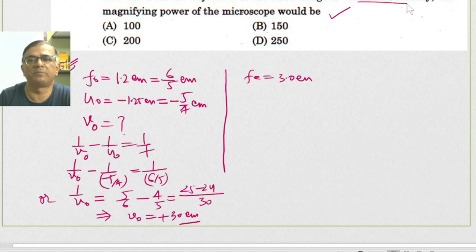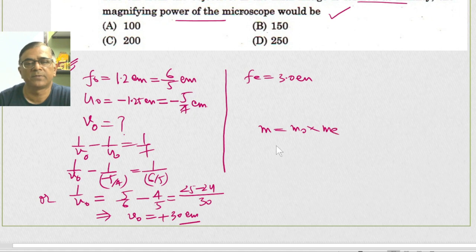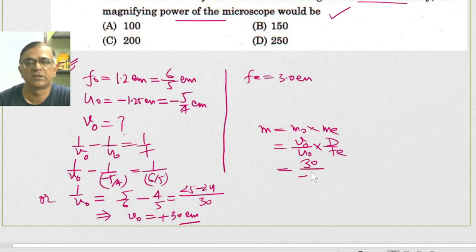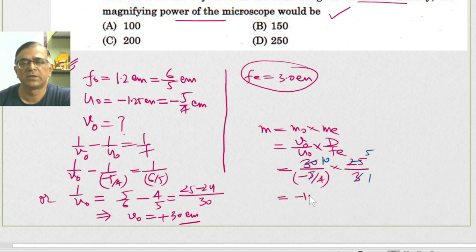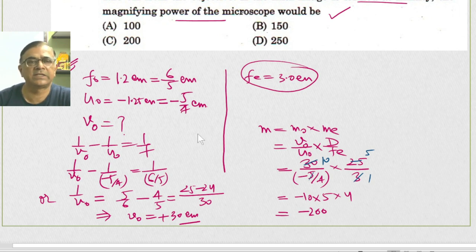Since the final image is formed at infinity, the magnifying power is M = MO × ME = (VO / UO) × (D / FE). Substituting VO = 30, UO = −5/4, D = 25 cm, and FE = 3 cm: M = (30 / (−5/4)) × (25 / 3) = −10 × (5 × 4) × (25/3). This simplifies to −200. The negative sign indicates that the final image is inverted. The expected final answer is option C.